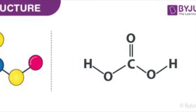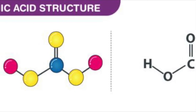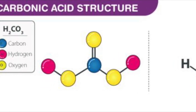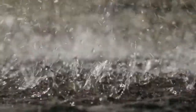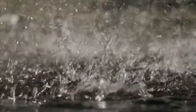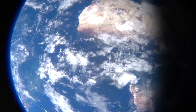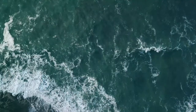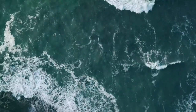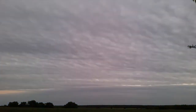Carbon ions in the atmosphere bond with water to create a weak acid called carbonic acid. This falls from the earth as rain, which dissolves rocks and other earth formations. The carbon in the rocks releases into rivers, which carry ions into the ocean, which are then released into the air as carbon dioxide, and the process begins again.